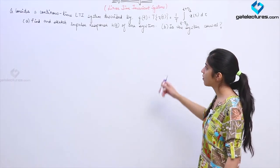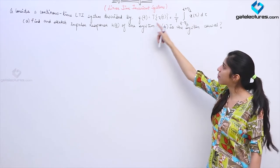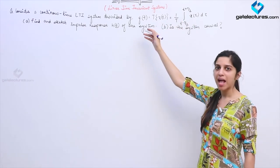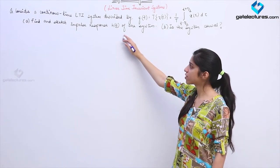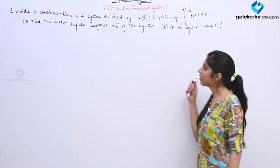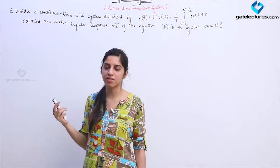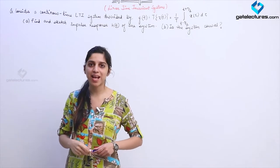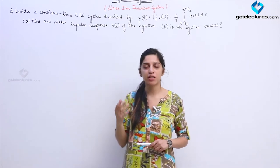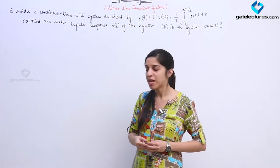They have given a continuous time LTI system where the input and output are related by these equations. This is basically defining the system, and they are asking for the impulse response of the system, and then asking you to check the causality of the system. To check causality we can just look at the impulse response: if it exists for values of t less than 0 the system is non-causal, and if it does not exist for t less than 0 the system is causal.